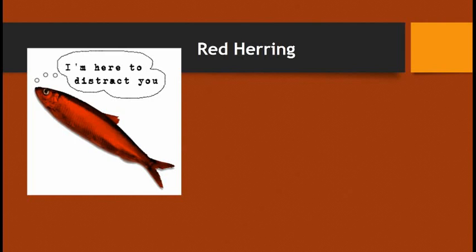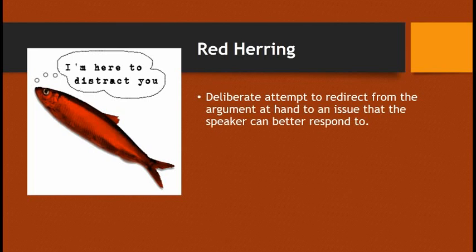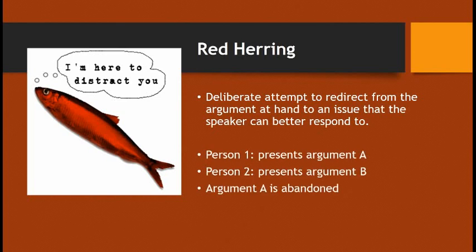Red herring — 'I'm here to distract you.' It is a deliberate attempt to redirect from the argument at hand to an issue that the speaker can better respond to. Person one presents argument A, person two presents argument B, and then we don't talk about argument A anymore. We actually see this a lot in politics — politicians like to pivot. You might ask a candidate about their stance on health care, and they don't want to talk about health care, so instead they shift to their expertise with the military. It's irrelevant to what's actually at hand, but there's still this redirection of argumentation.